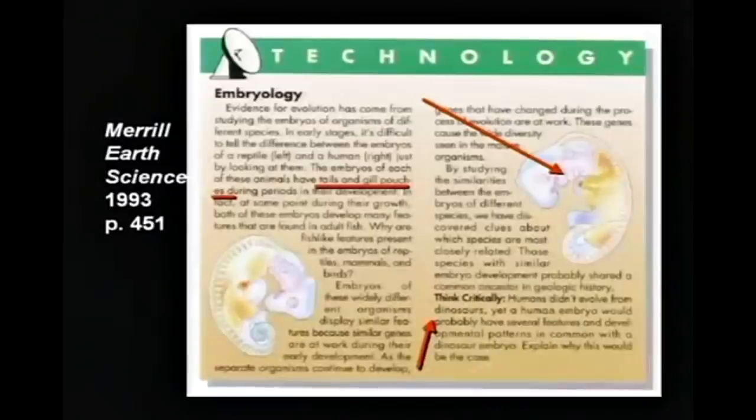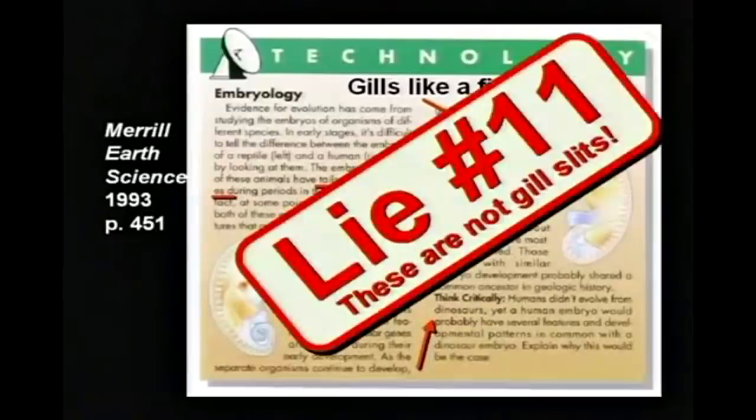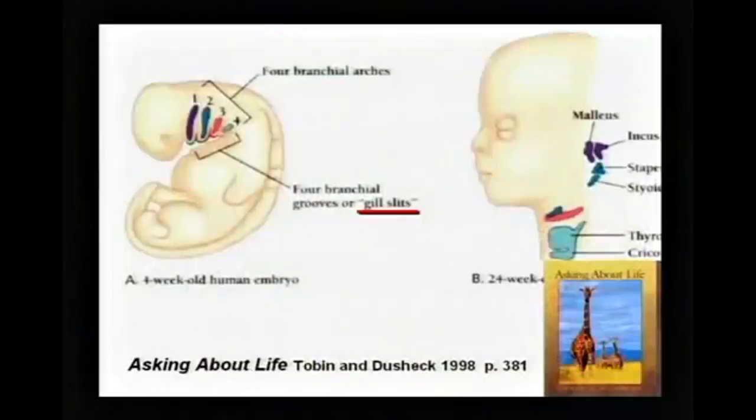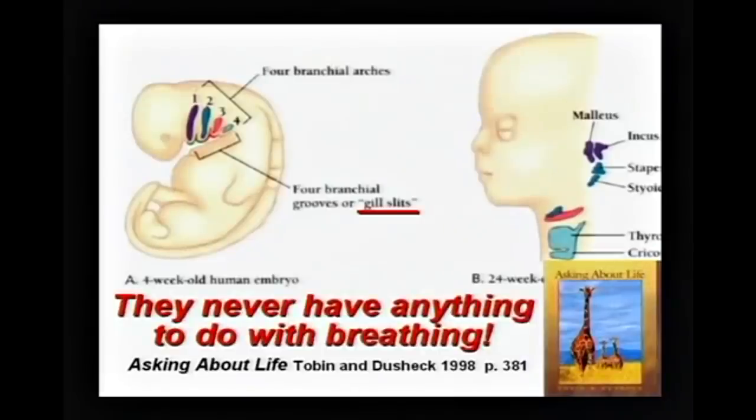They tell the kids the embryo — the baby growing in the mother — has gills like a fish. No textbook ever said that. Gill pouches are not the same thing as gills. Those are not gill slits. Those little folds of skin you see on the embryo grow into bones in the ear and glands in the throat. They never have anything to do with breathing.